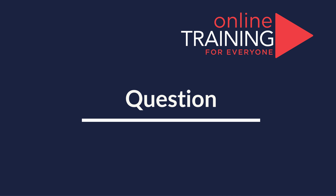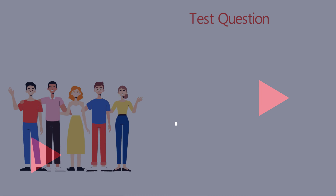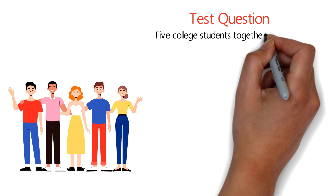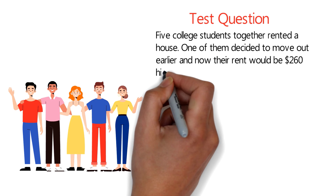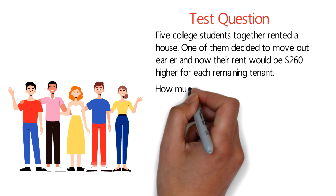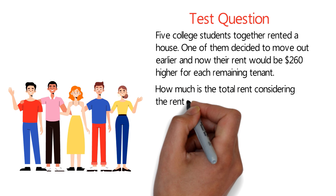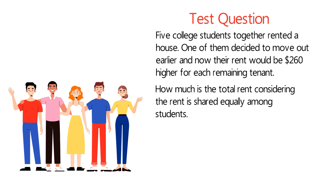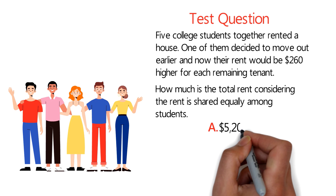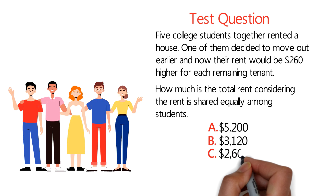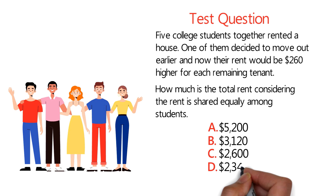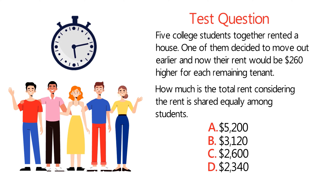Here's an interesting question you may need to know not just for the test, but also if you're trying to rent a house. Five college students together rented a house. One of them decided to move out earlier, and now their rent would be $260 higher for each remaining tenant. What is the cost of the total rent, considering the rent is shared equally among students? You have 4 choices: Choice A $5,200, Choice B $3,120, Choice C $2,600, and Choice D $2,340. Give yourself 20 to 30 seconds — maybe pause this video. Let's go ahead and solve this challenge together.